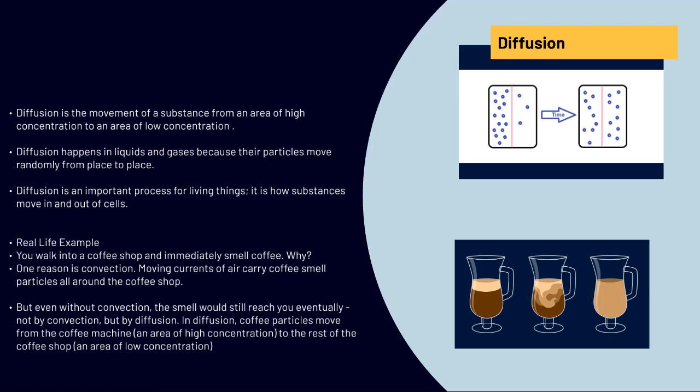As you can see the area on the left, let's look at that first square. The area on the left of the line is an area of high concentration and then as you can see as time goes by, the area with high concentration eventually moves to the area of low concentration. And diffusion happens in liquids and gases because their particles move randomly from place to place.